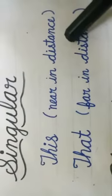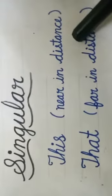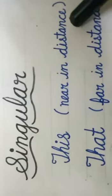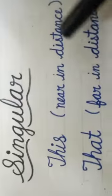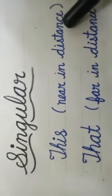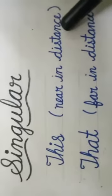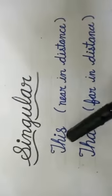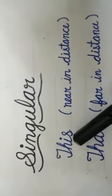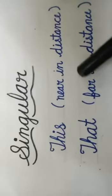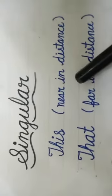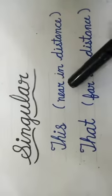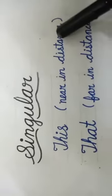This — 'this' is used to point out a single person or object that is near in distance, or you can say which is close to you. This ka use hum us single person ya object ke liye karte hain jo hamare paas ho.